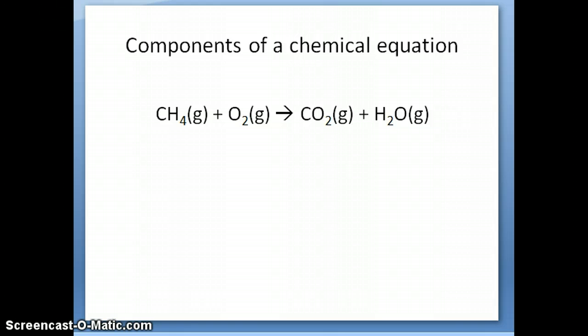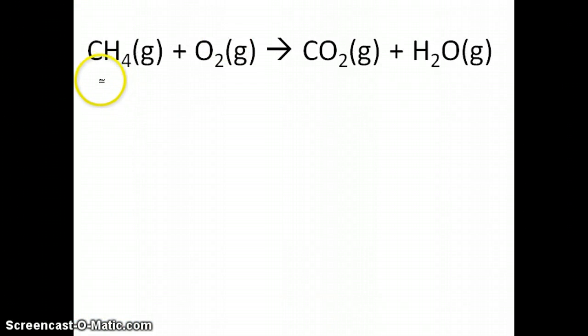So what I want to talk about now is the components of a chemical equation. So here, for example, you have a reaction, a chemical reaction, written in the form of an equation. So you have CH4, methane, reacting with oxygen, O2, forming CO2 and H2O. So what we're going to talk about is just some of the names that we would associate with these species, as well as how to write a chemical equation correctly. The reactant molecules are the molecules that are written on the left side of this arrow. So these are your reactants. And then, of course, the molecules that are made from those reactants are the ones written on the right side, and those are called the products.